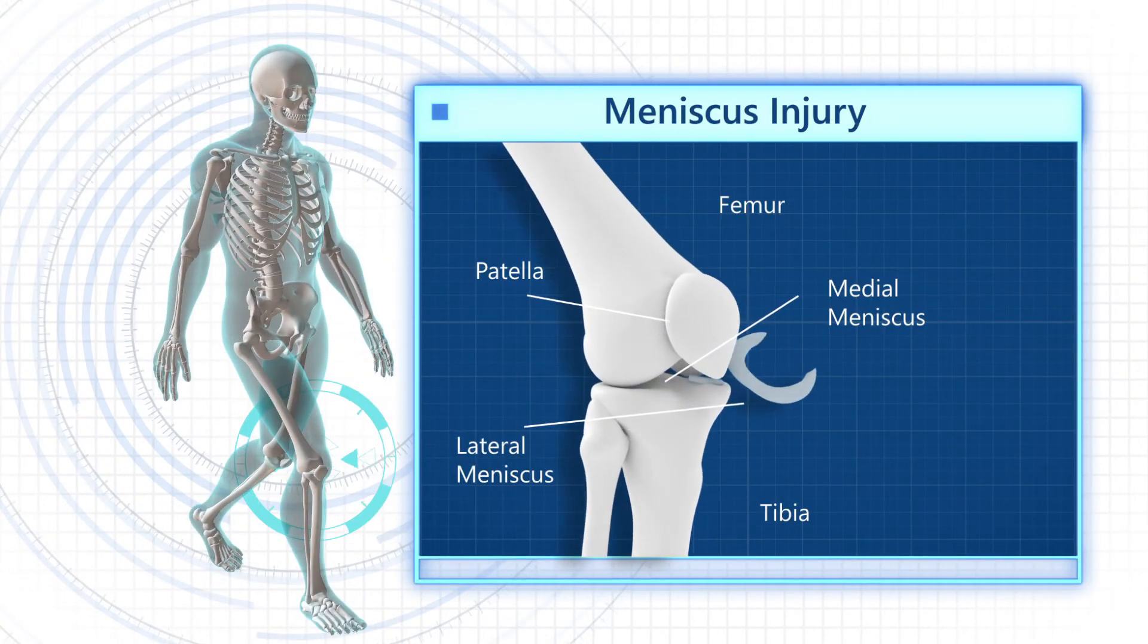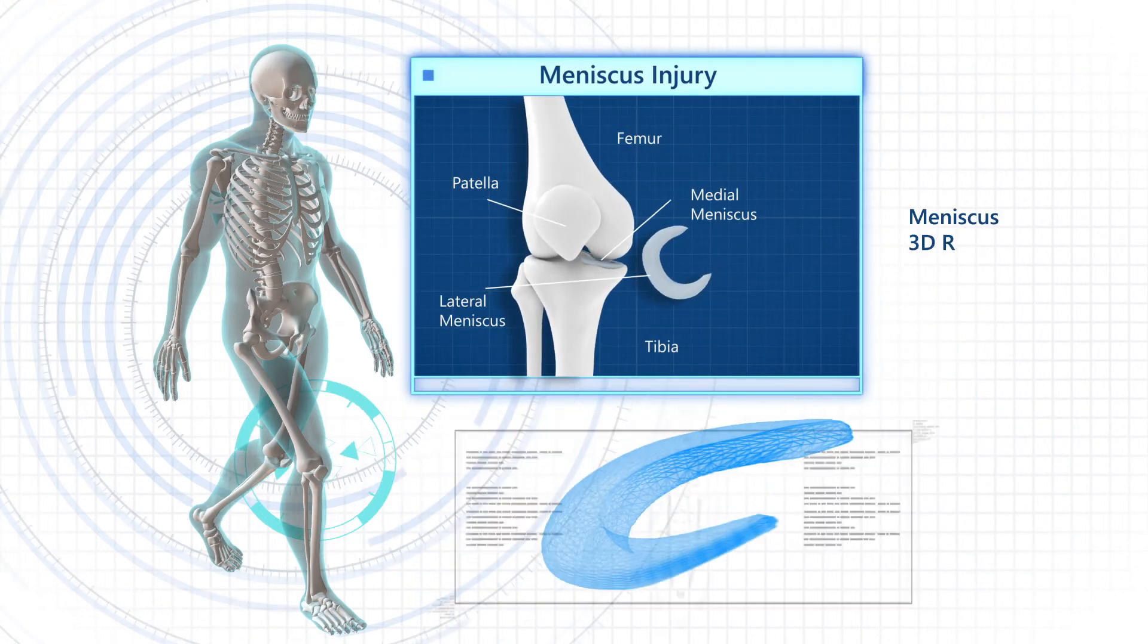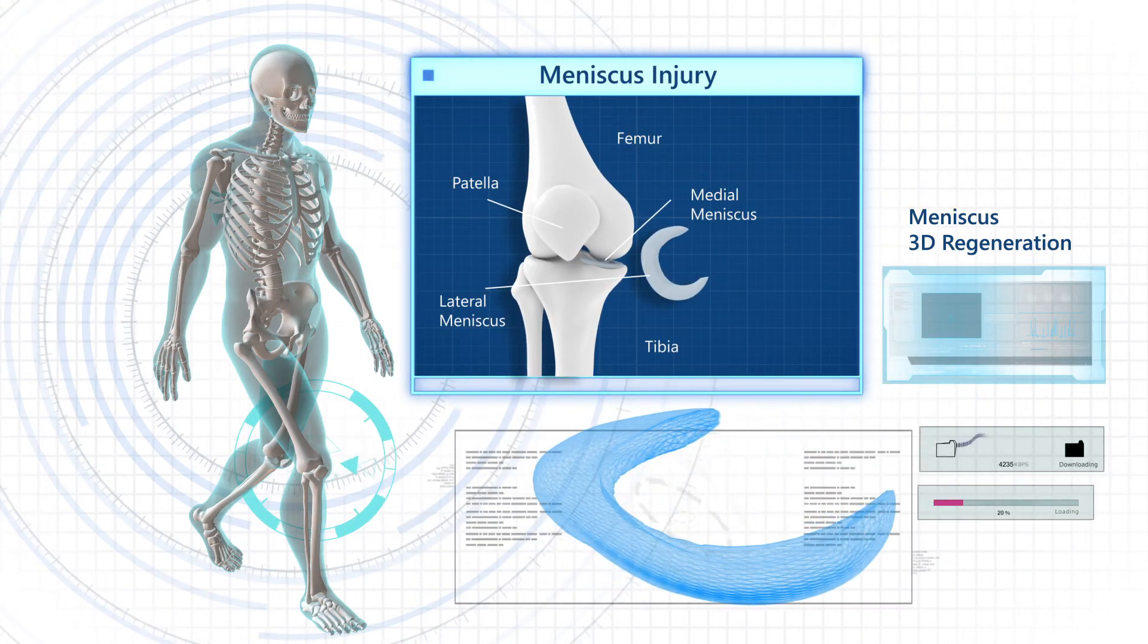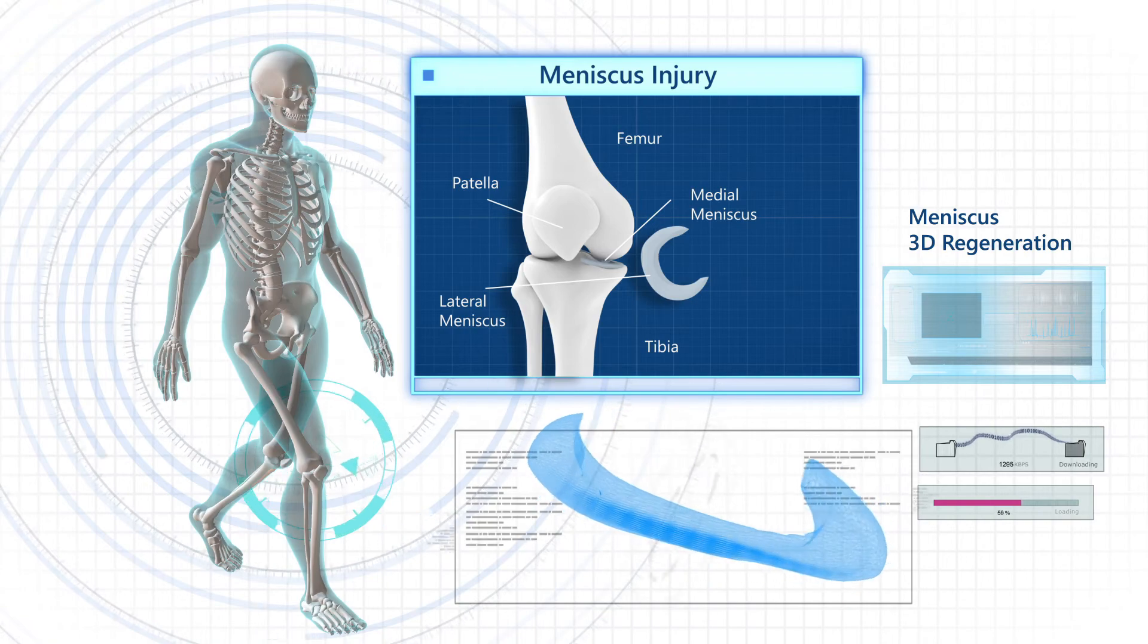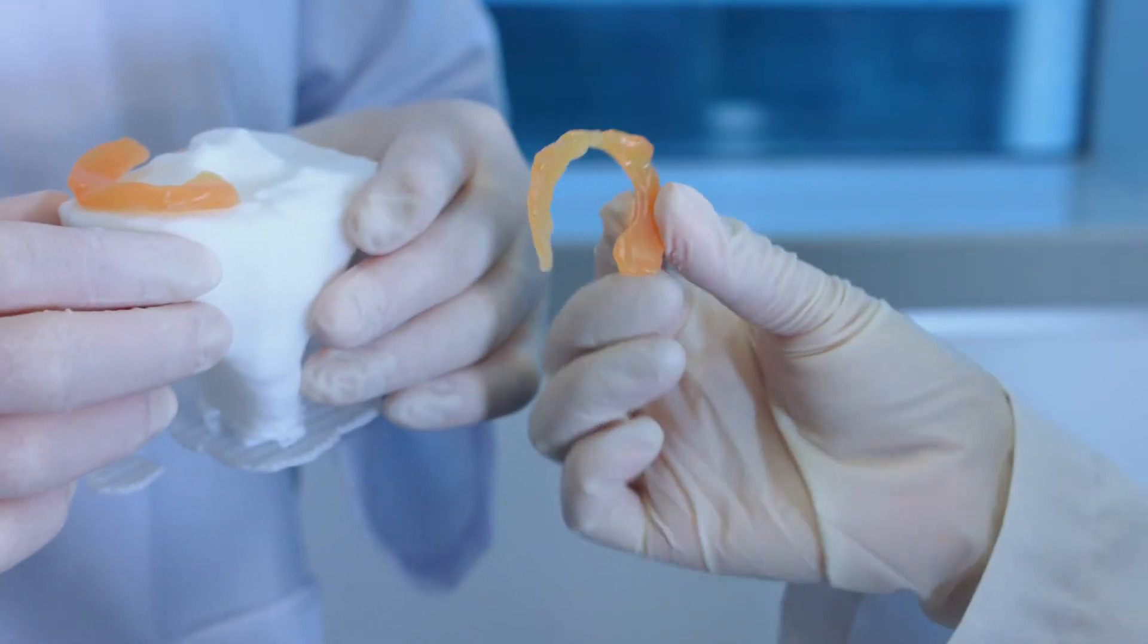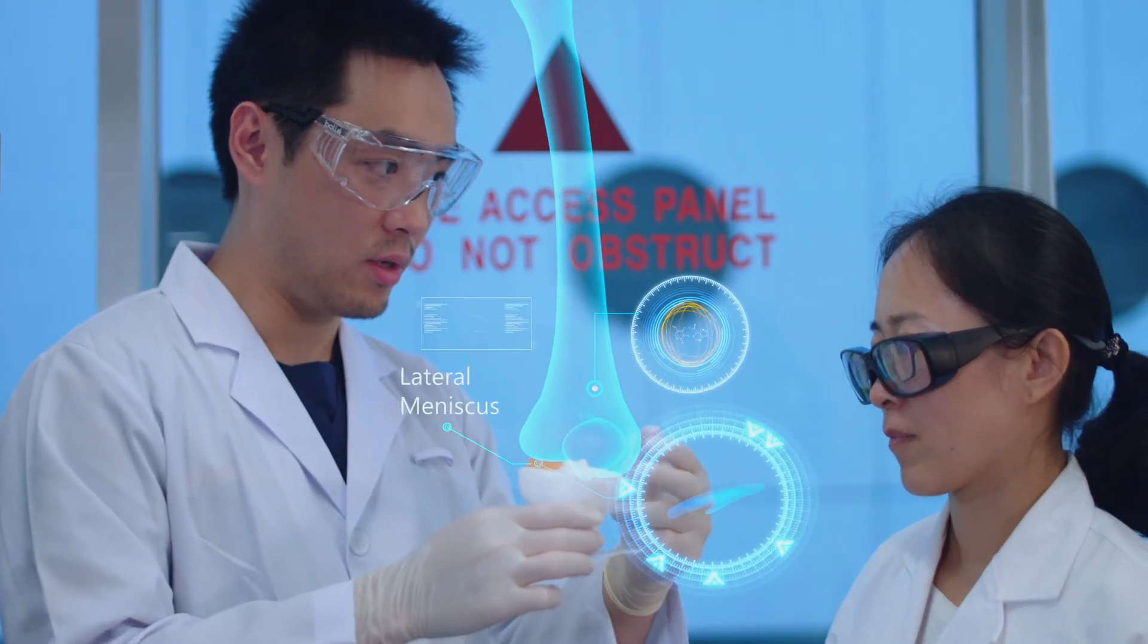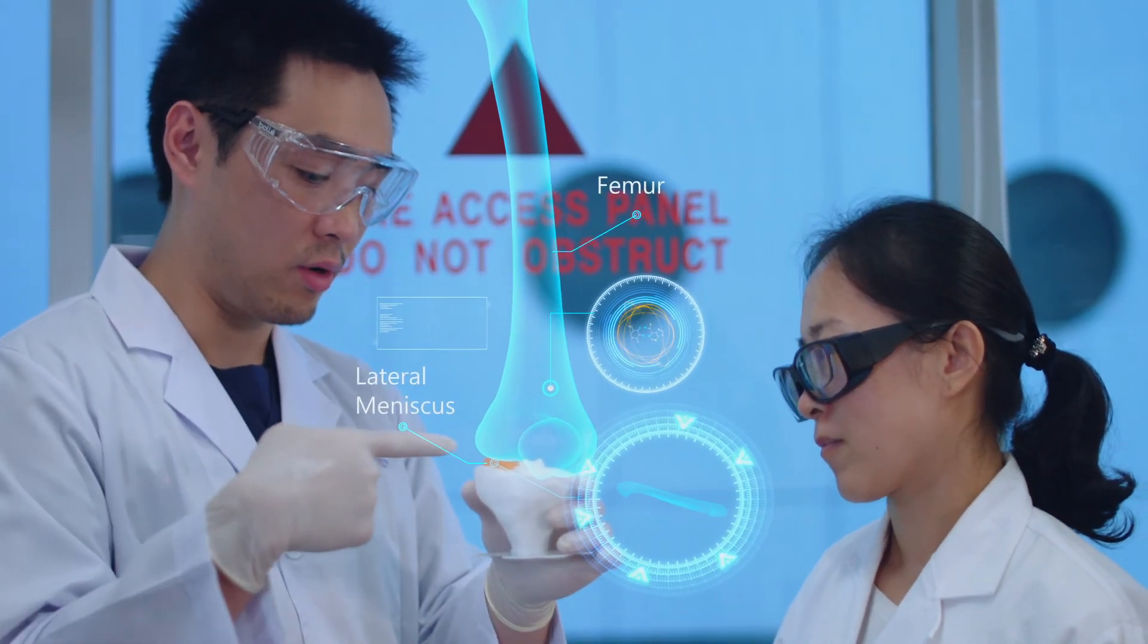Additive manufacturing has specific advantages because we can have customized implants for patients, and also the structure of the implants can become much more like what was the natural bodily part. This area of development has the potential to lead to the ultimate holy grail of printing living tissues and organs.